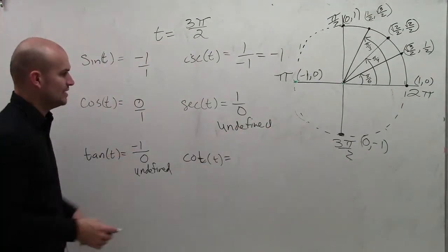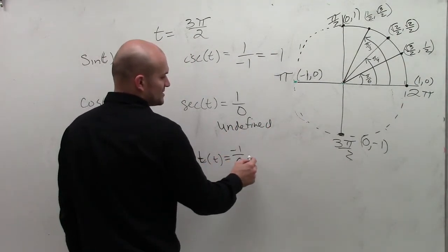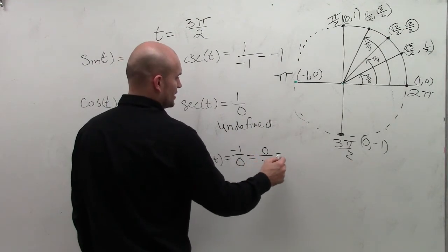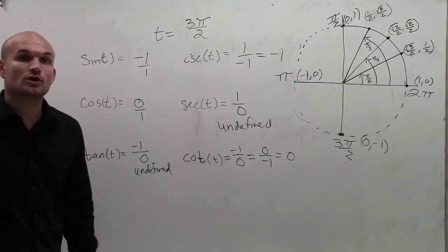The reciprocal of -1 over 0 equals 0 over -1, which is 0 for cotangent of t.